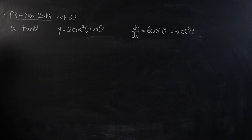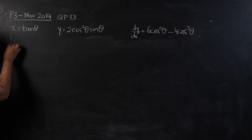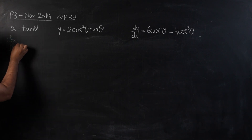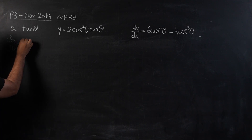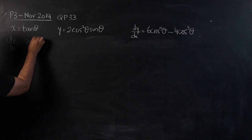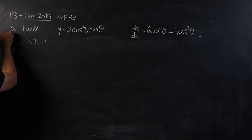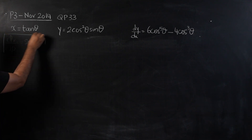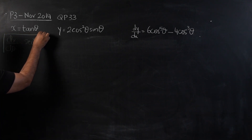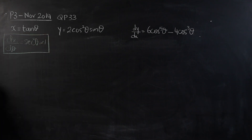For the first part, we are going to differentiate x. So, it would be dx by dθ. And this would become secant squared theta times 1. So, dx by dθ is going to be secant squared theta.